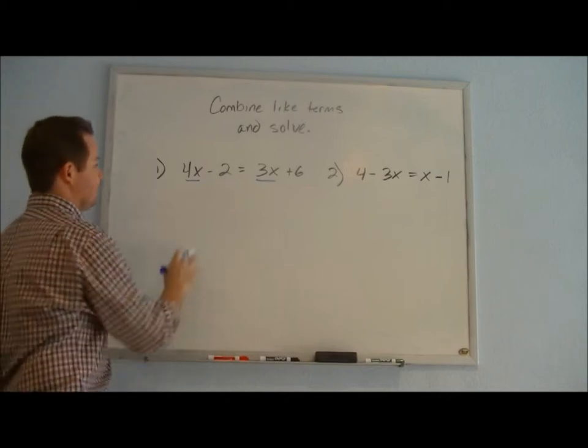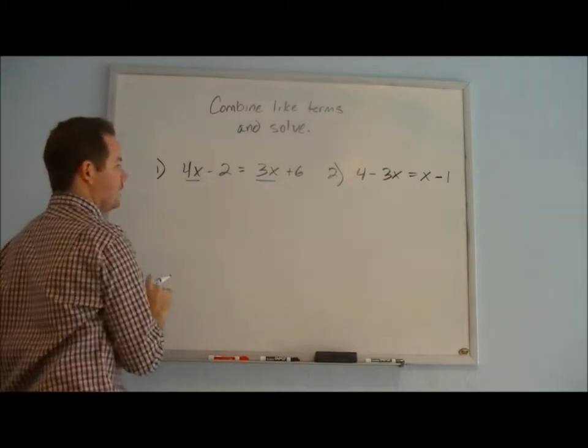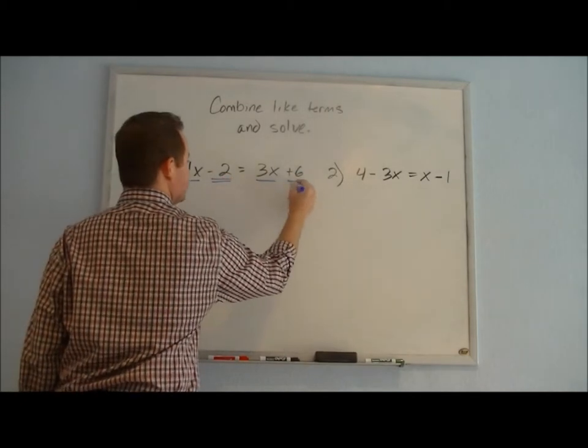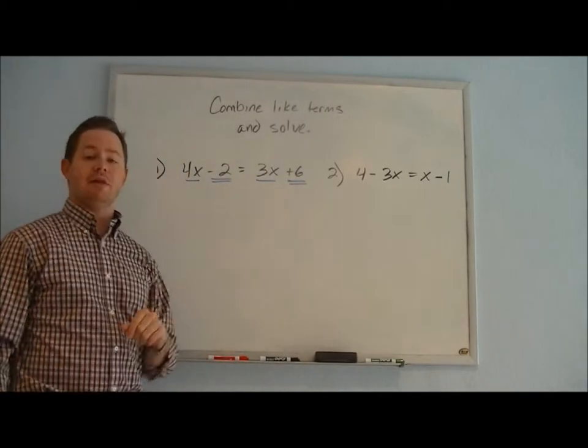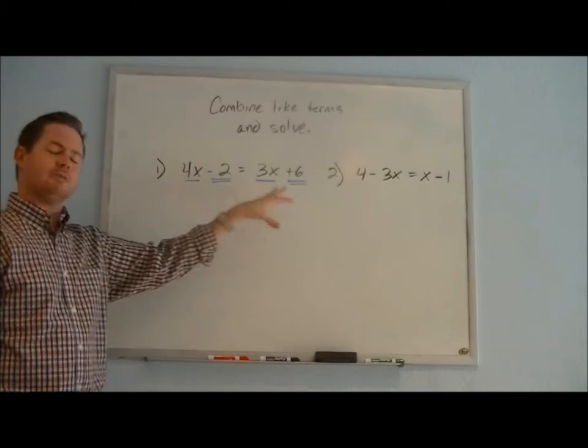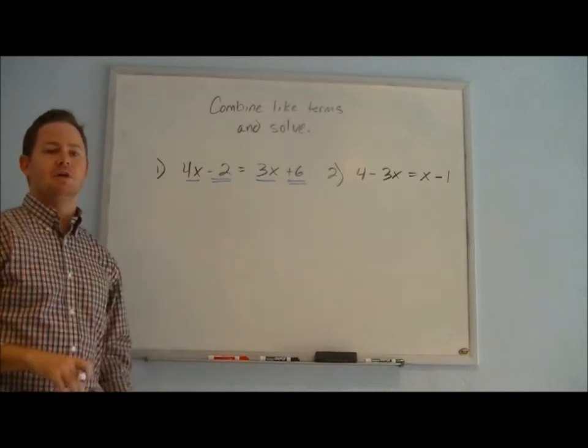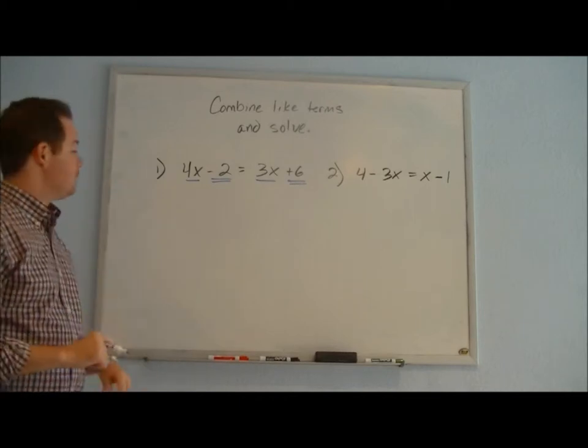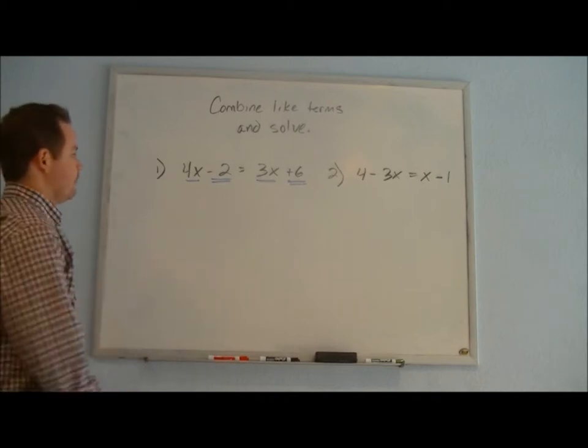Here we have 4x and 3x—we know we're going to combine those together. And here we have a minus 2 and a positive 6—we know we're going to combine those with each other. This just helps us follow along a little bit more easily if we're trying to pick out the like terms. But again, if you're already familiar, feel free to go ahead and start solving.